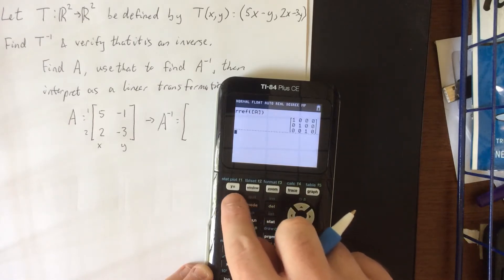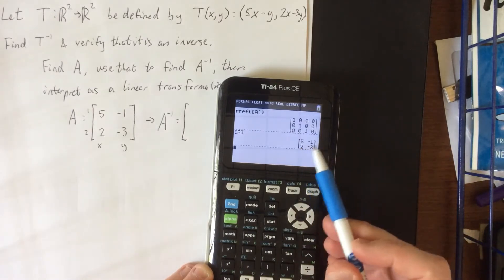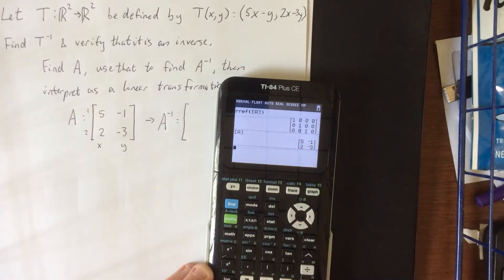Then we'll exit the matrix menu, re-enter the matrix menu, and just make sure that everything got inputted correctly. 5 negative 1, 2 negative 3 looks good to me.